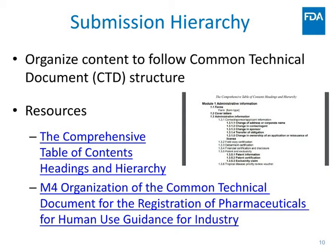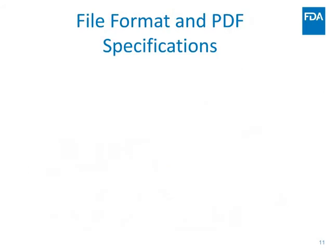As you are pulling together your regulatory content for your ANDA submission, think about the common technical document structure - the CTD structure. This is the five modules - module one, two, three, four, five - and within each module there are standardized section headings. It's really important to be familiar with this hierarchy as you're creating your ANDA application. We have resources with hyperlinks giving you all the headings, called the Comprehensive Table of Contents, Headings, and Hierarchy, and a document called M4 Organization of the Common Technical Document.